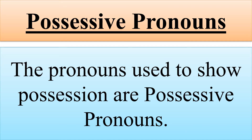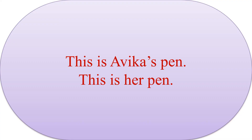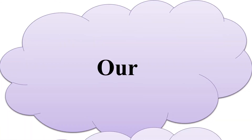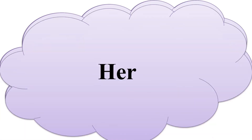Now come to the possessive pronouns. The pronouns used to show possession are possessive pronouns. For example, this is Avika's pen. This is her pen. Avika's pen shows the possession of Avika over the pen. It is used in possessive case. 'Her' has replaced it. 'Her' is in possessive case. The words my, our, your, his, her, its, their are used in possessive case.